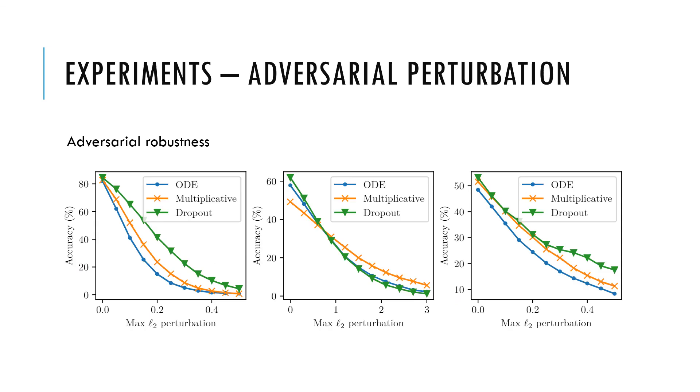To convince you, we conducted three different experiments. In the first experiment, we compared the adversarial robustness with and without random smoothing under three different datasets. It shows that in most cases, the dropout or multiplicative noise outperforms the ODE model.